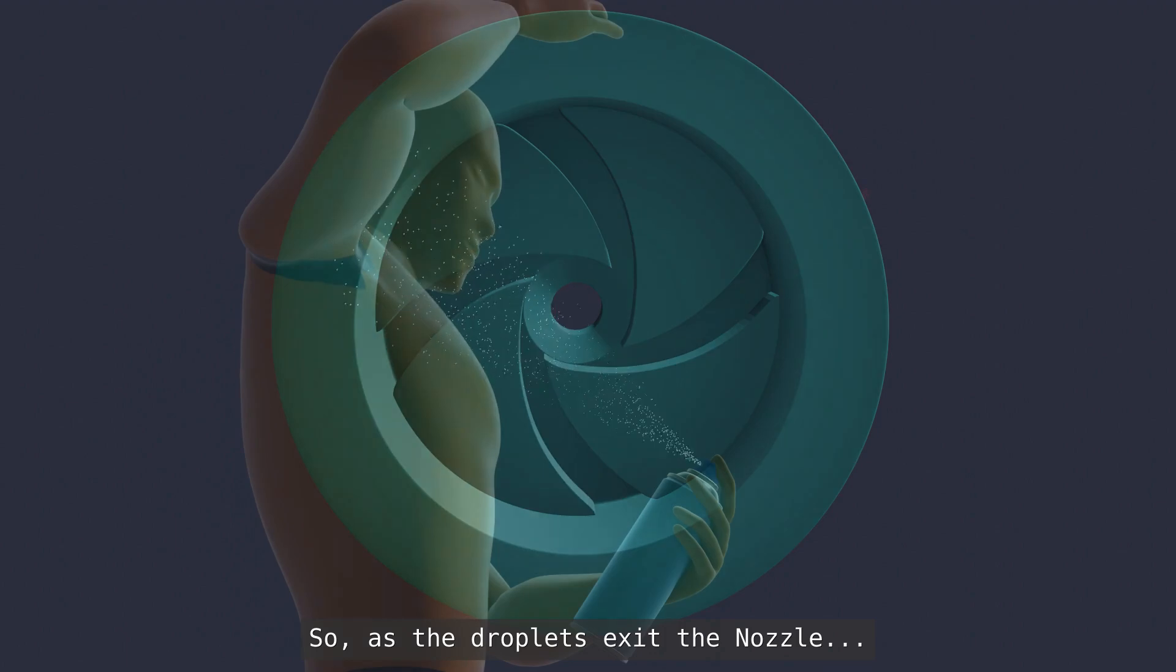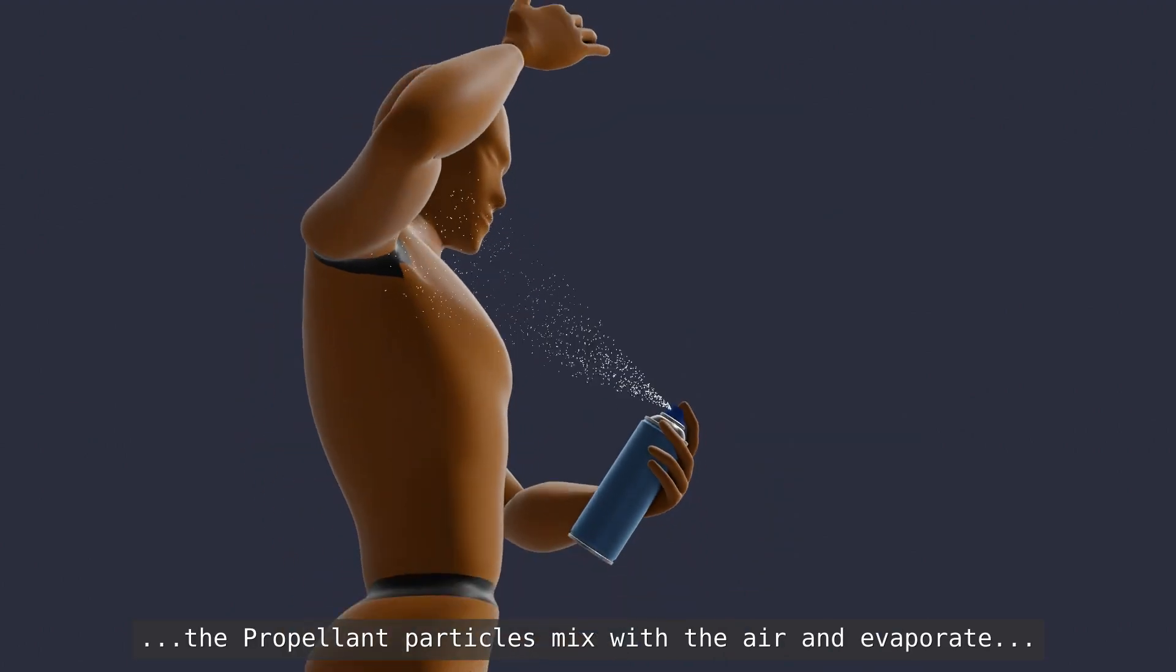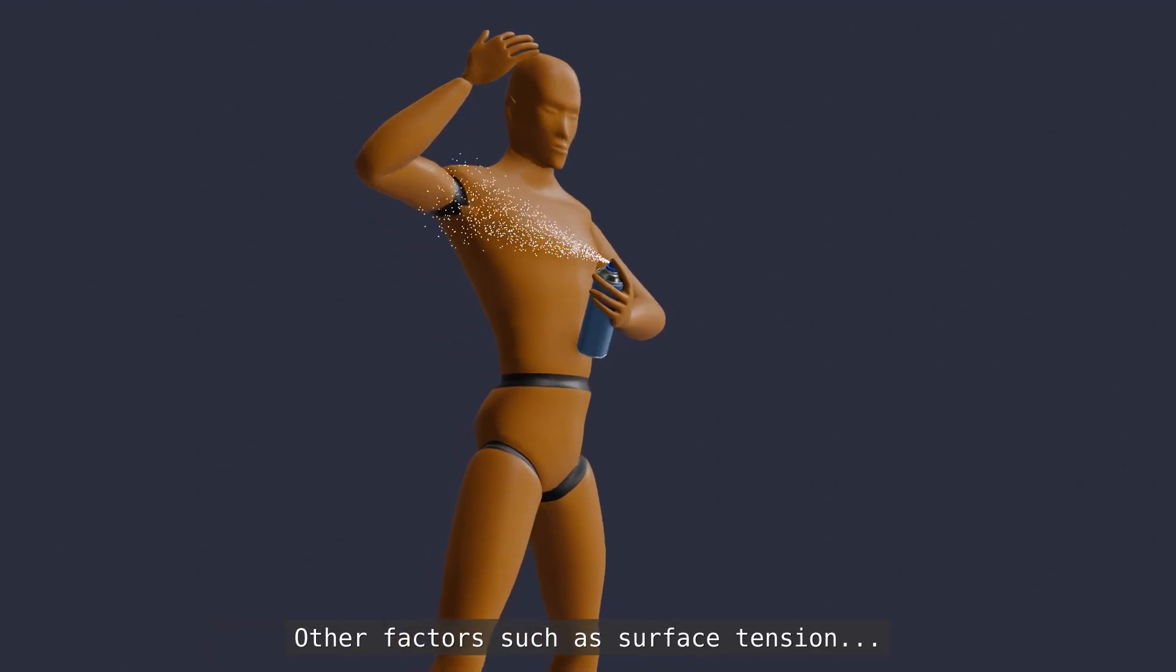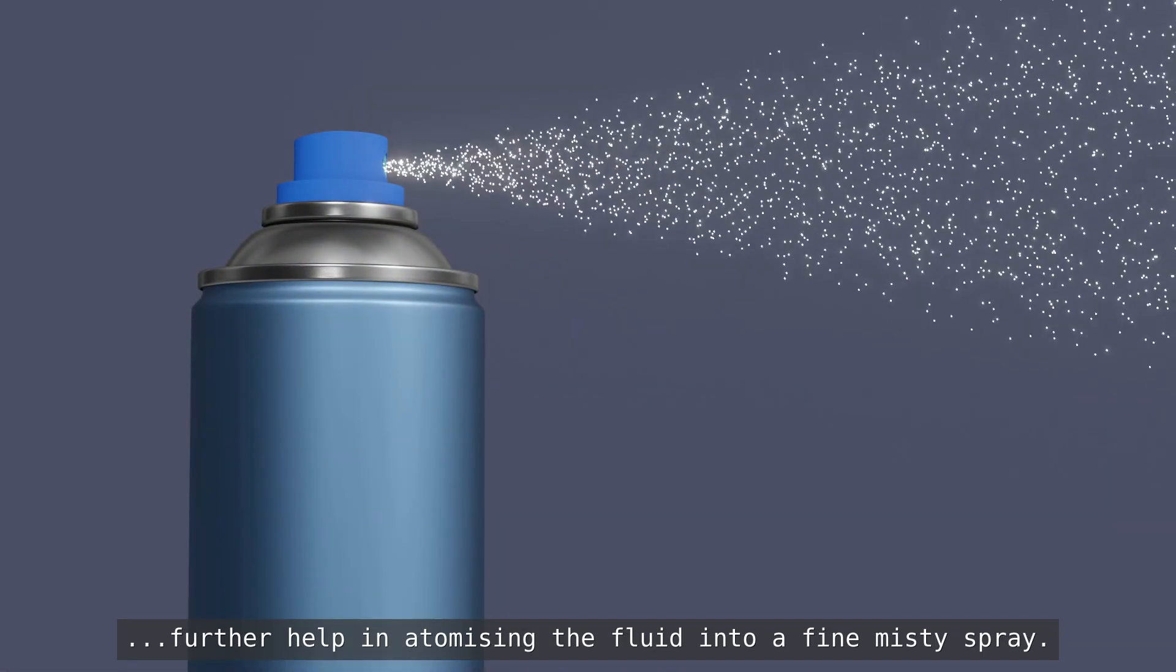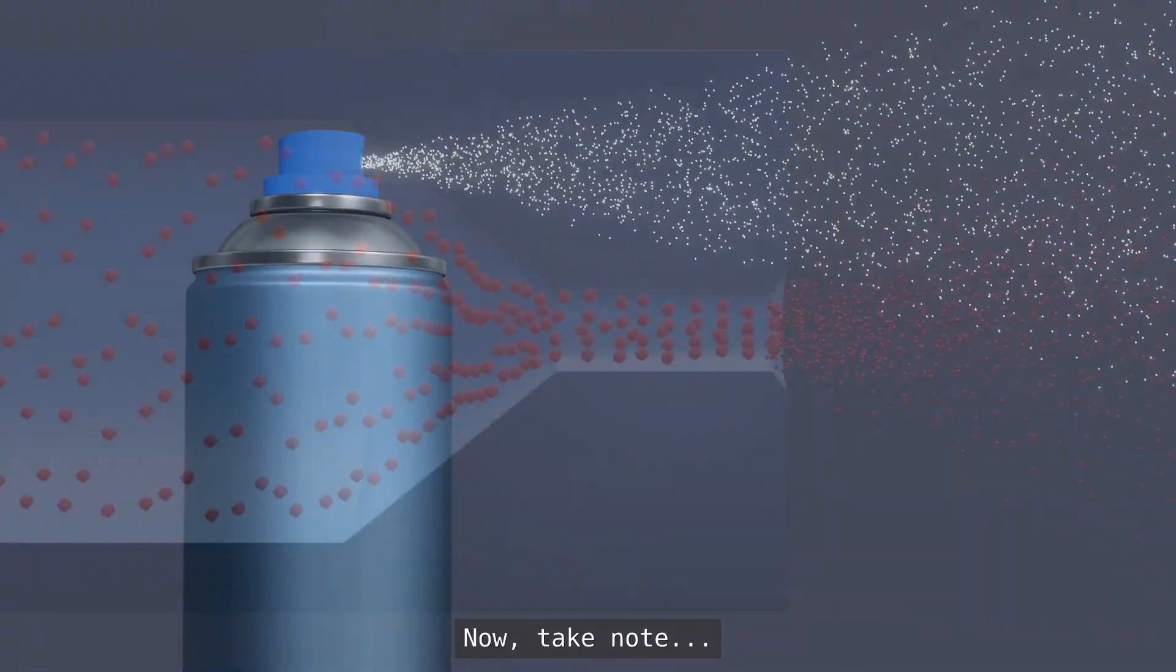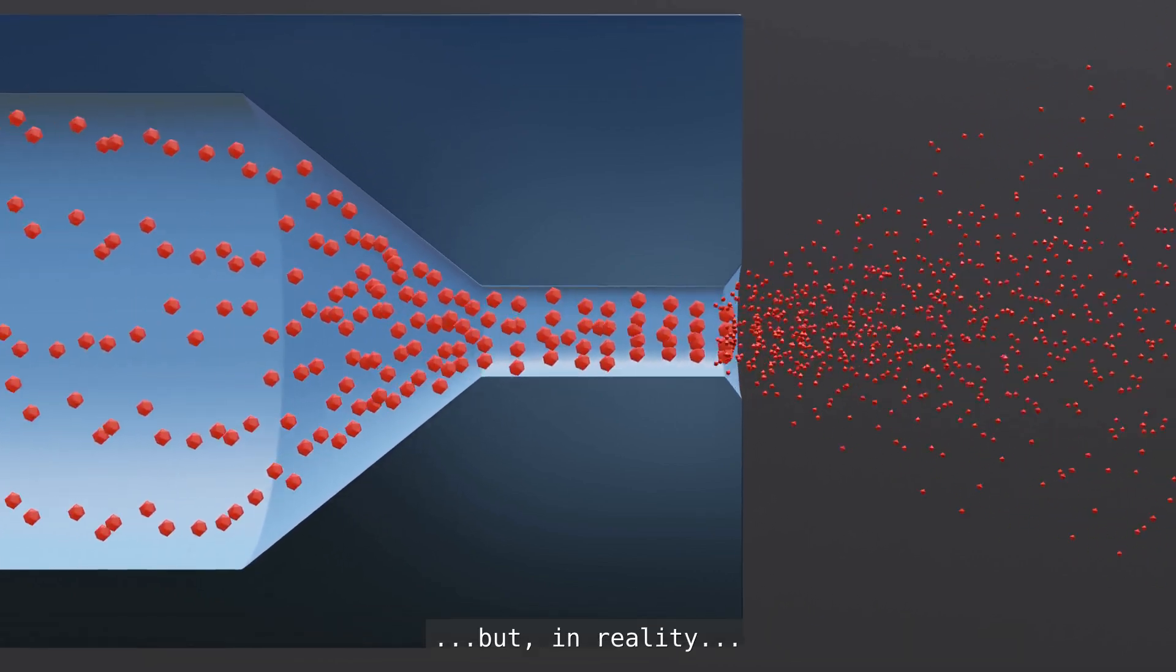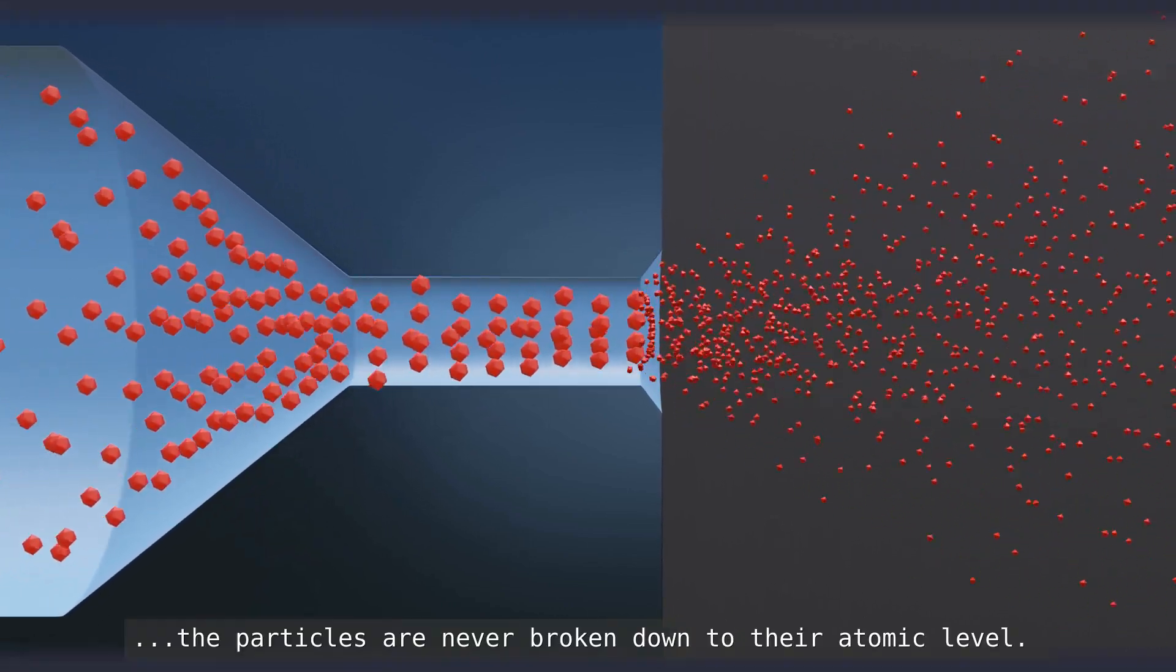So, as the droplets exit the nozzle, the propellant particles mix with the air and evaporate, further breaking the product into tiny droplets. Other factors such as surface tension, aerodynamic drag and turbulence further help in atomizing the fluid into a fine misty spray. Now, take note, the term atomizing or atomization has been used here, but in reality, the particles are never broken down to their atomic level.